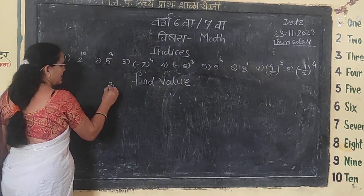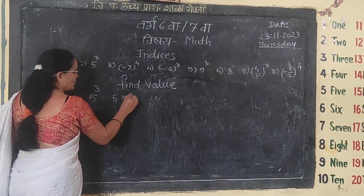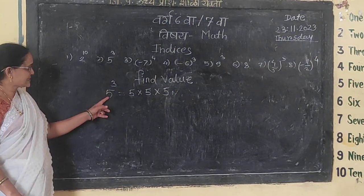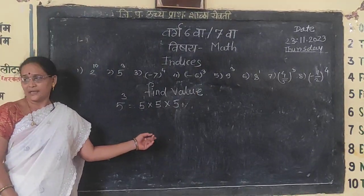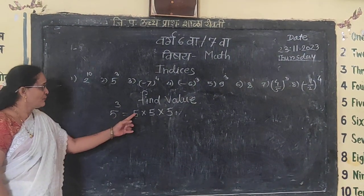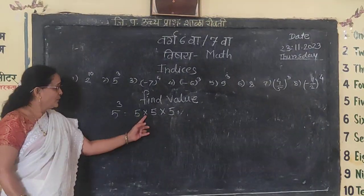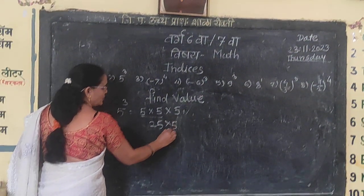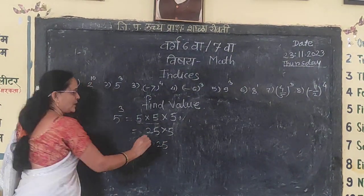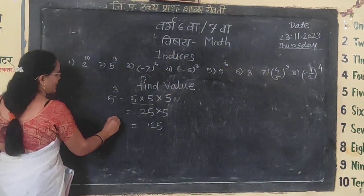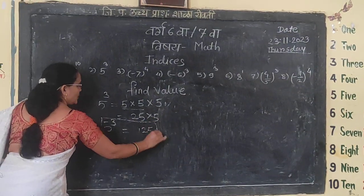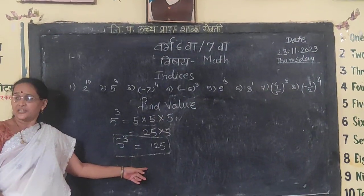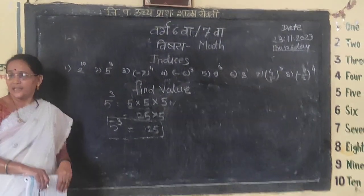5 raised to the power 3 is equal to 5 into 5 into 5. 5 into 5 is 25, and 25 into 5 is 125. That is the value of 5 raised to the power 3. So 5 raised to the power 3 is equal to 125.